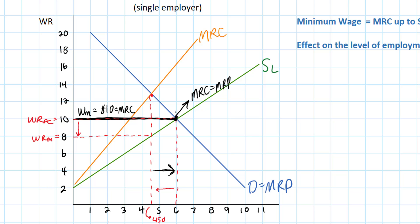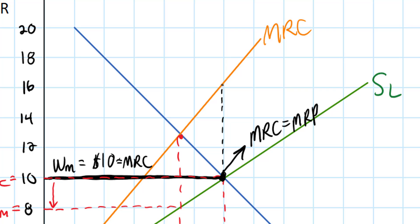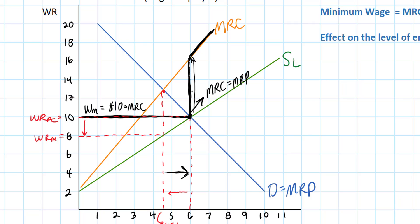So what happens to marginal resource cost now? We end up with a kinked marginal resource cost curve. If the firm wishes to hire more than 600 workers it must now raise the wage rate, causing its marginal resource cost to increase back to the original MRC curve. The black line on this graph represents the new supply and marginal resource cost curve for the monopsonist following the imposition of a minimum wage above the original wage rate of $8 per hour. Ultimately, the deadweight loss that resulted from the monopsonistic labor market is actually eliminated by the minimum wage.